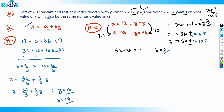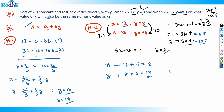Starting from x = 12, adding 6 gives x = 18. Starting from y = 8, adding 10 gives y = 18. Both x and y equal 18 — confirmed. Method 2 is preferable; it's faster and more logical.